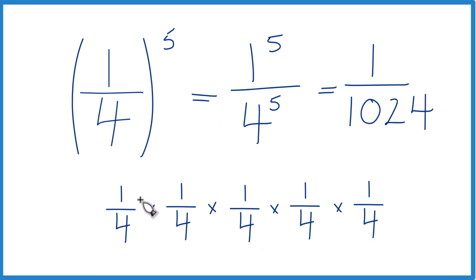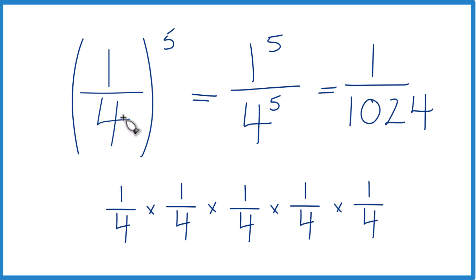That makes sense, because we're taking a fraction of a fraction of a fraction of a fraction of a fraction — that gets small pretty quick. So that's it: 1/4 to the 5th power equals 1 over 1,024.